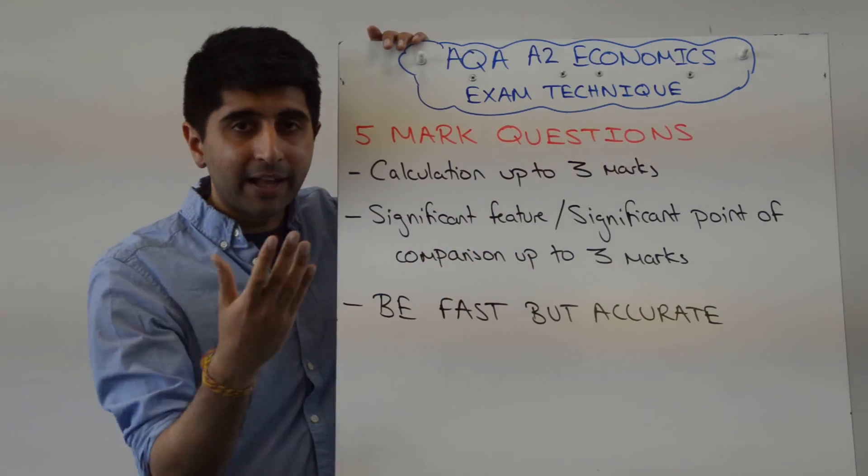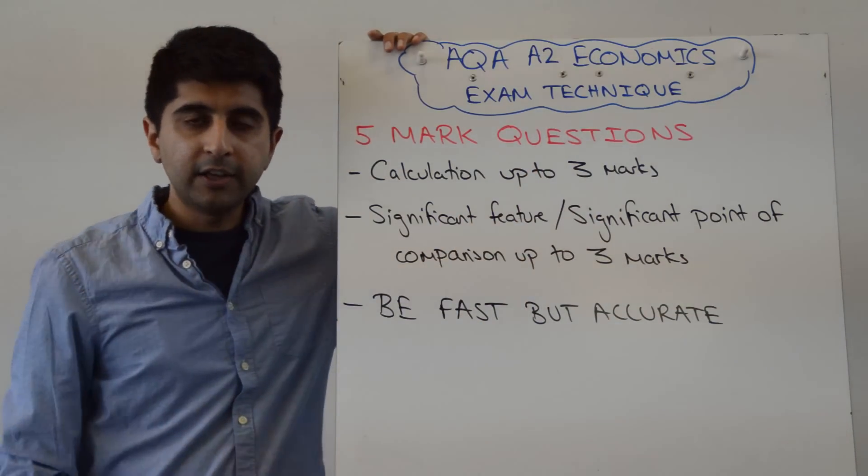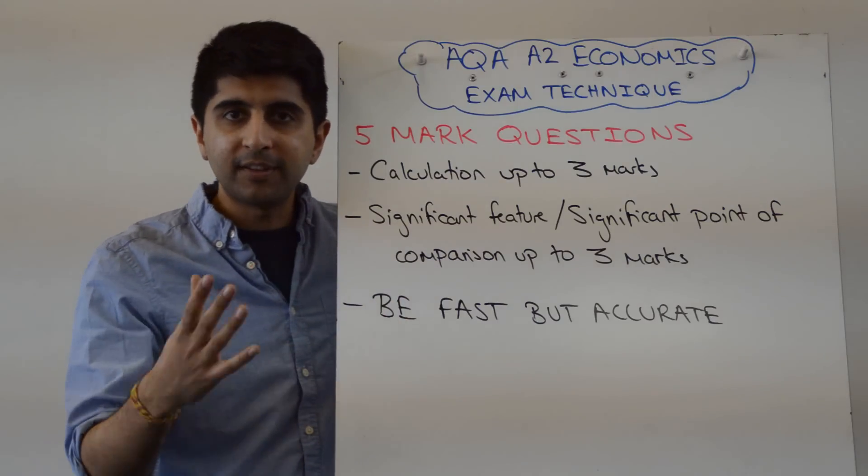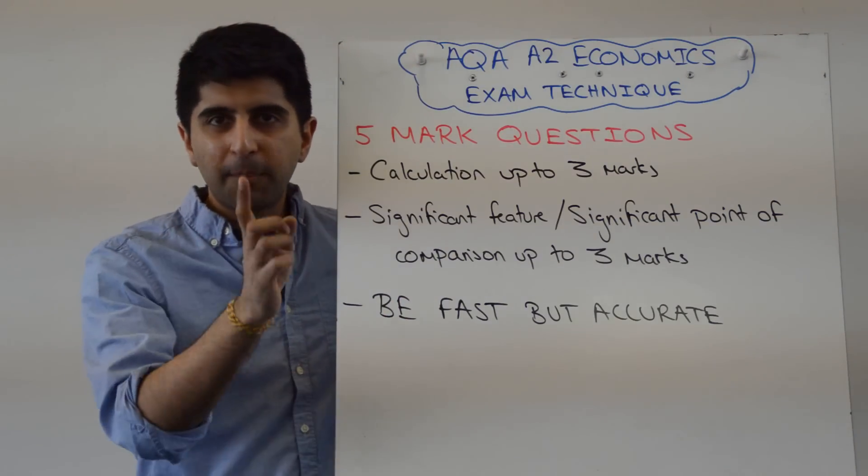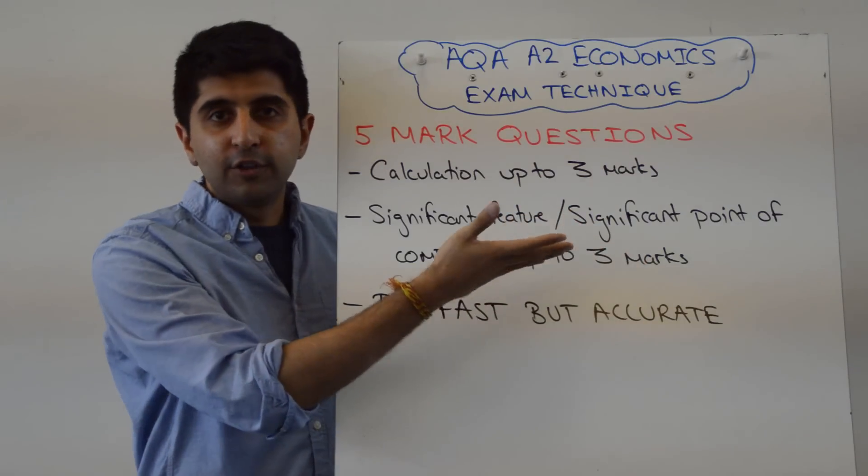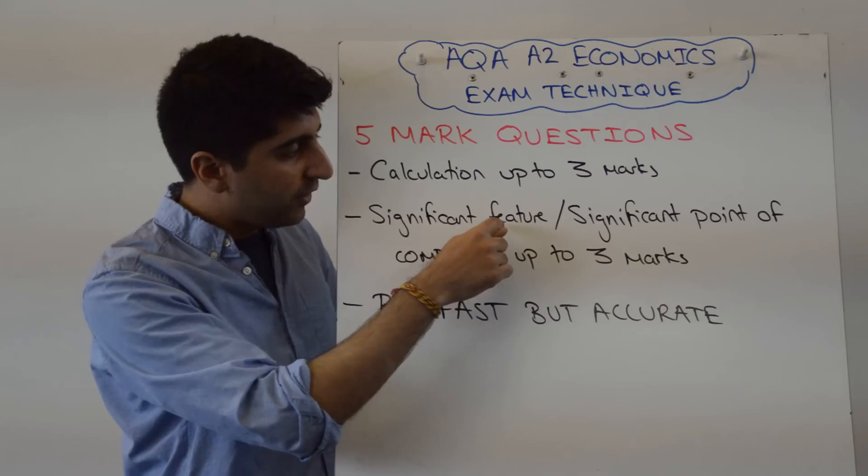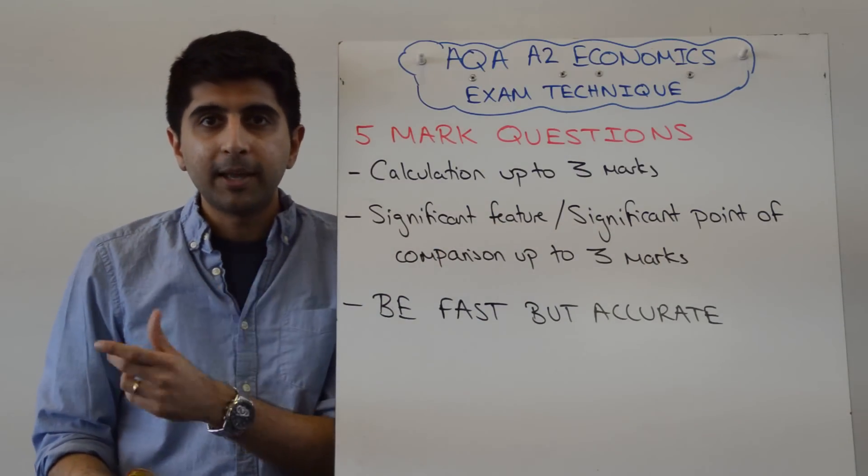And up to 3 marks for doing that. So just in case, for some reason, you haven't got 3 marks on the calculation, maybe you screwed up the final number, you made a mistake, you forgot percent or you forgot pound sign or something, then there are 3 marks available for doing this data part of the question. The key thing, remember, when you do this, is that you need to make a point.